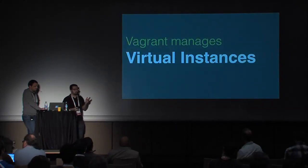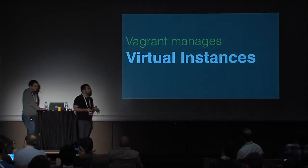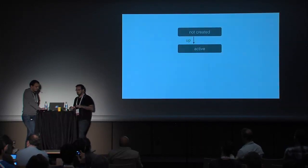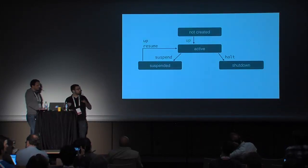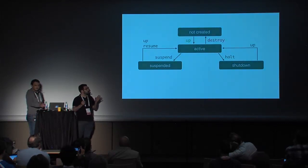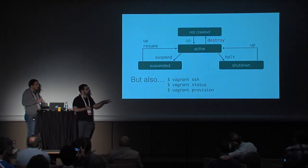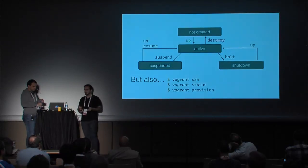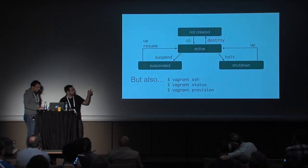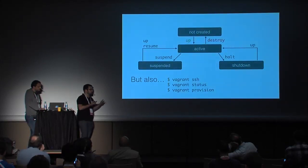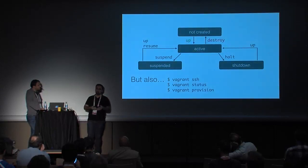Vagrant manages virtual instances, and these instances have a lifecycle. First they are not created; when you run 'vagrant up' they become active. You can suspend and resume them, you can stop and restart them. When you destroy your environments, they go back to 'not created.' You also have specific Vagrant actions like SSH, which enables you to connect to your instance; status to see the state of your instance; and provisioning to run a provisioning script — like a shell script, Puppet, or Chef.